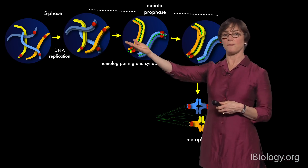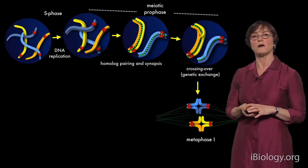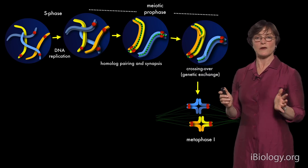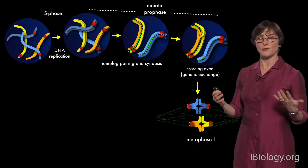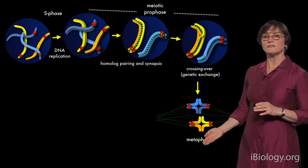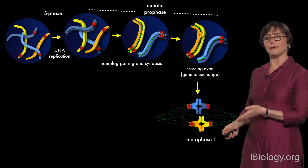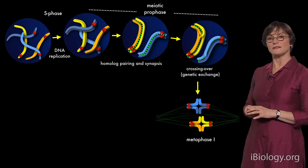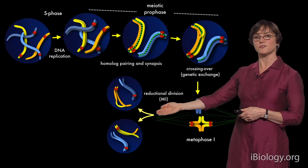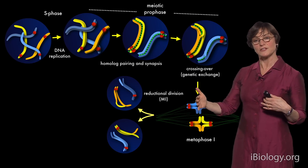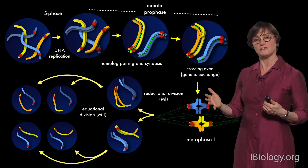This whole process of pairing, synapsis, and recombination takes place during a long period called meiotic prophase, which can last anywhere from about 24 hours to many days depending on the organism and genome complexity. Once chromosomes have accomplished pairing, synapsis, and recombination, they condense and segregate in two successive cell divisions: first the homologous chromosomes separate, then the sister chromatids come apart as they do during mitosis.